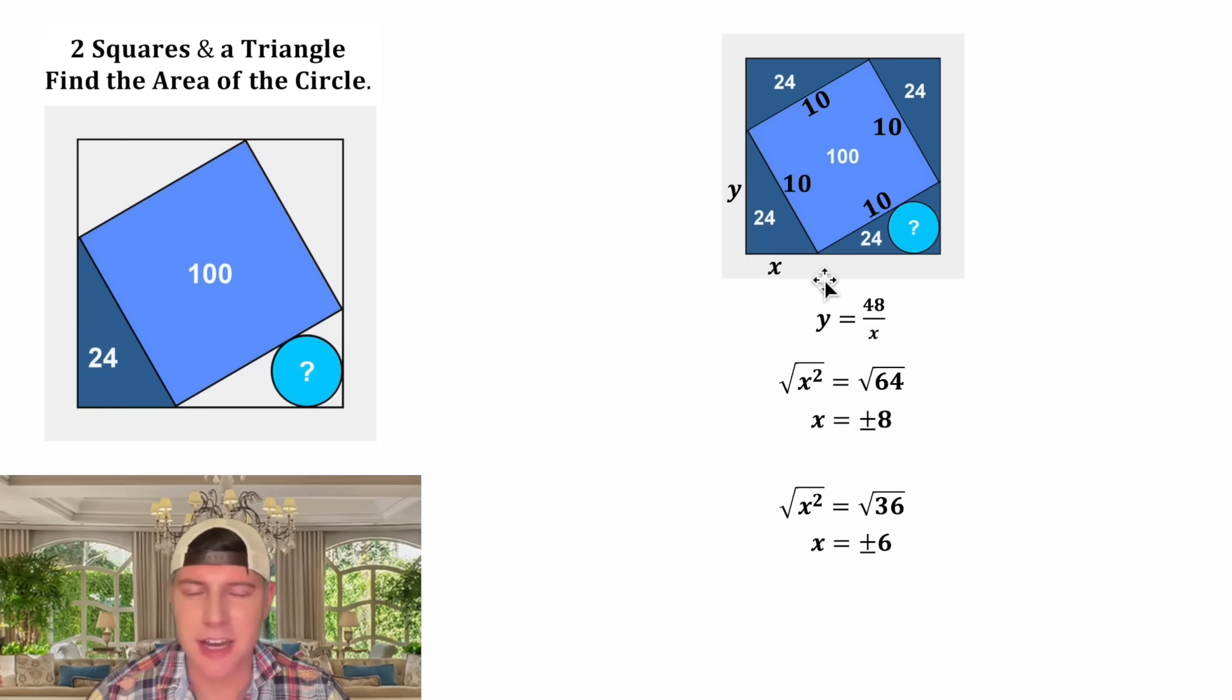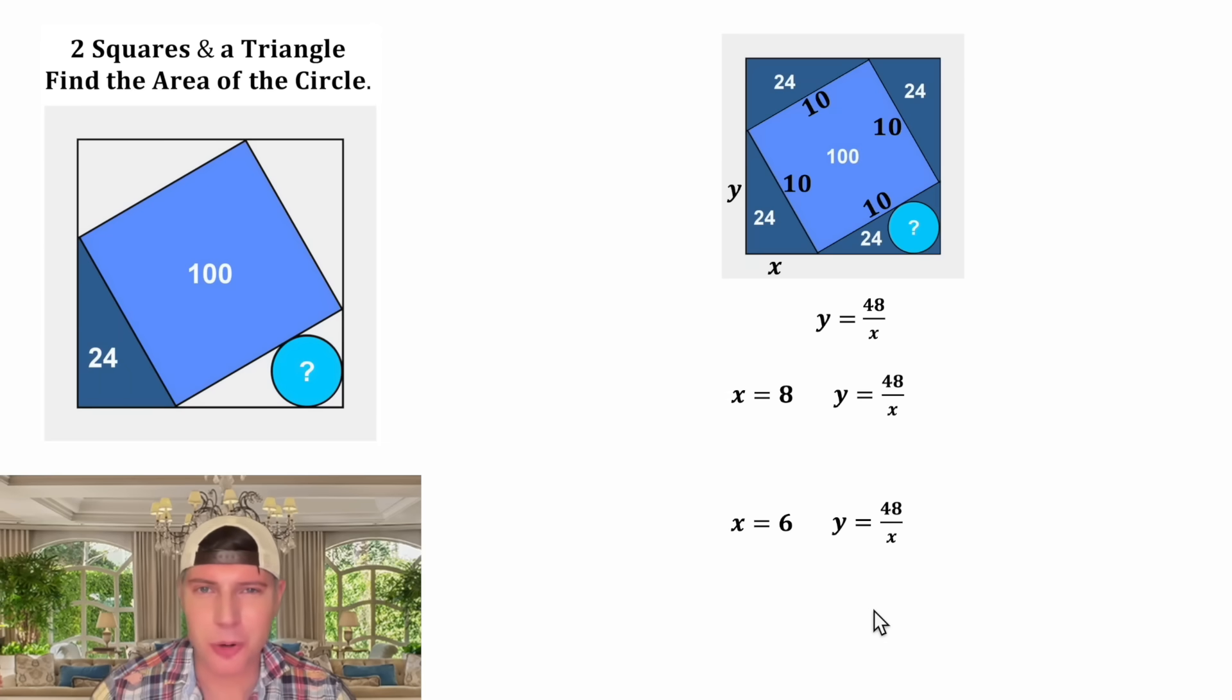Immediately I can tell you that x is not a negative value, so we can change this plus or minus 8 into 8 and this plus or minus 6 into 6. And now we have two potential values for x. Let's find each corresponding y value. In the place of this x let's plug in 8, and in the place of this x let's plug in 6. 48 over 8 is 6 and 48 over 6 is 8.